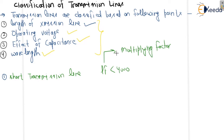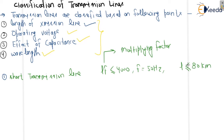So if lf is less than 4000, and for f equal to 50 Hz, if you put in 50 Hz, then the length L should be equal to or less than 80 kilometers. So for a short transmission line at 50 Hz, the length should be 80 kilometers or less.